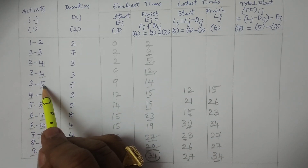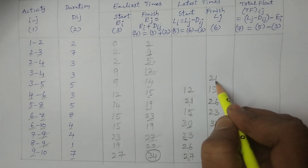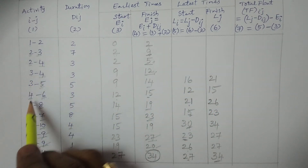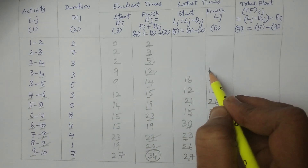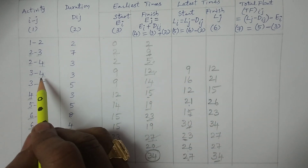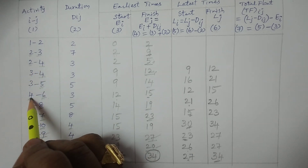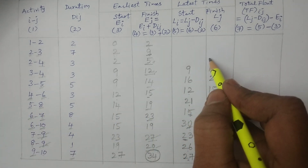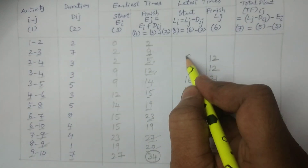For 3 to 5: only one value of 21. 21 minus 5 equals 16. For 3 to 4: only one value of 12. 12 minus 3 equals 9. For 2 to 4: L4 is 12, only one value. 12 minus 3 equals 9.